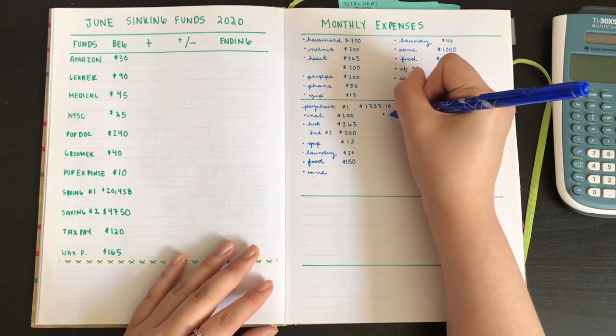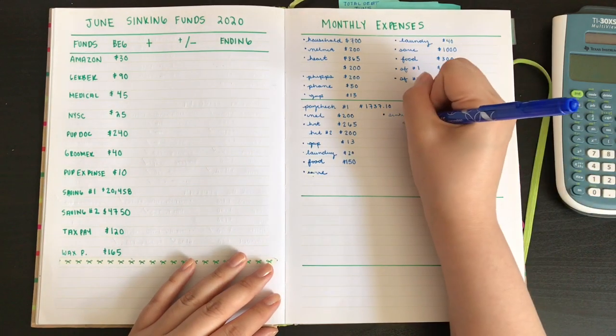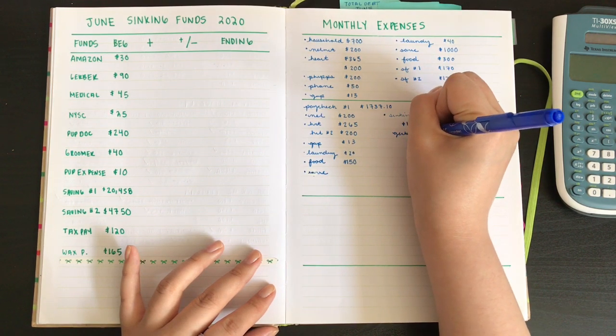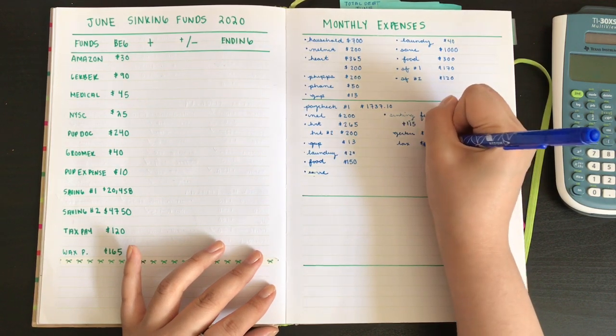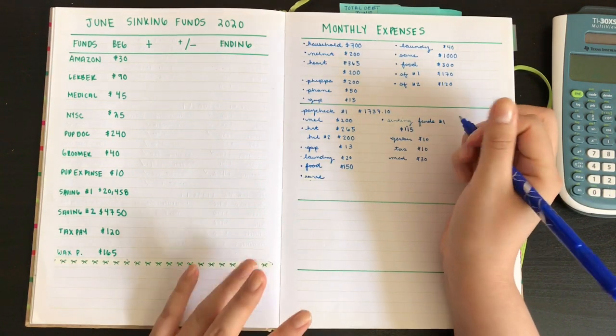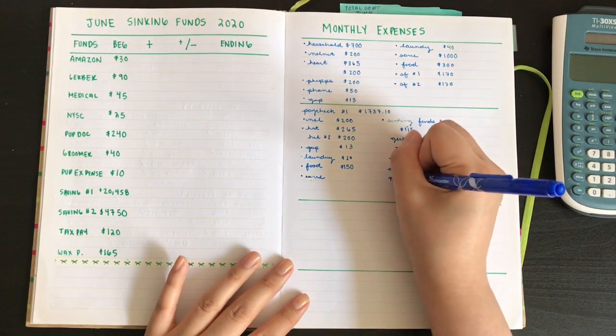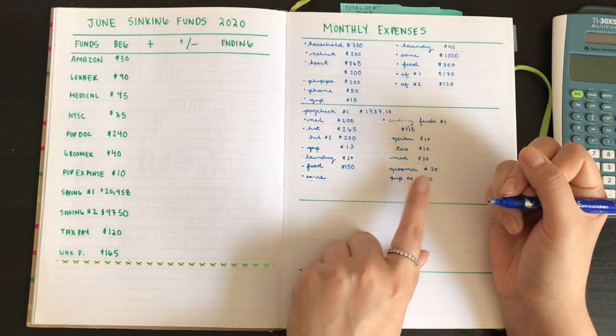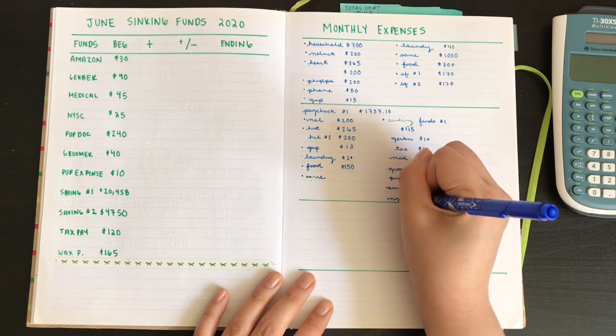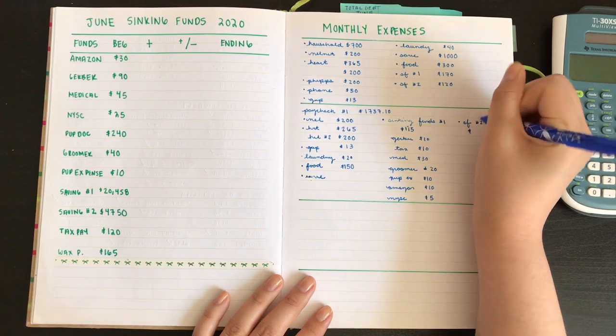I'm going to leave that blank for now, because then I'm going to go to my sinking funds. Sinking funds number one. And that's going to get a total of $115. So the first category is Gerber, which gets $10. Then I have tax, which gets $10. Then I have med. And that gets $30. Then I have groomer. And that gets $20. Then I got pup expenses. And that gets $10. I do want to increase the sinking fund. Then I have Amazon. And that gets $10. And then I have New York Sports Club. And that gets $5.